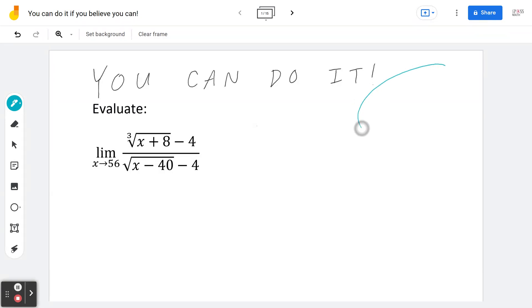Step 1. Always plug in 56. So in this case, if you do plug in 56, this is going to give you the cube root of 56 plus 8 minus 4 divided by the square root of 56 minus 40 minus 4. And if you think about this, this is going to be 0 divided by 0, which is indeterminate.